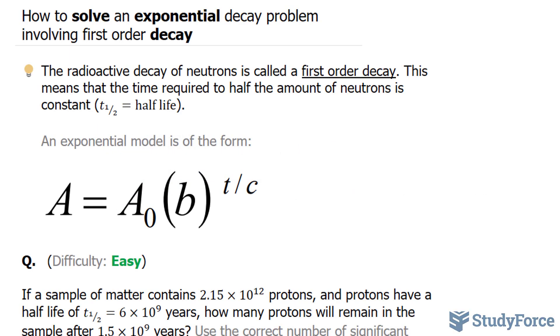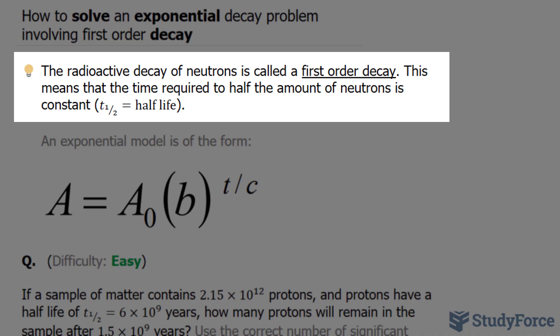In this video, I'll show you how to solve an exponential decay problem involving first order decay. The radioactive decay of neutrons is called a first order decay. This means that the time required to half the amount of neutrons is constant.